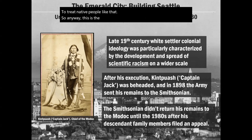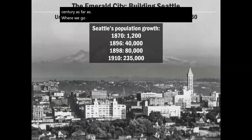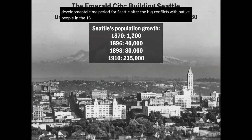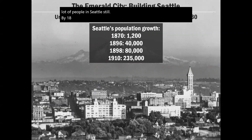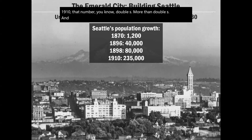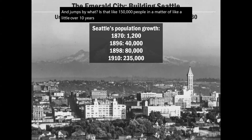That's the federal context of what's going on in the late 19th century as far as where we go from here in our story of Seattle's development. This is a really major developmental time period for Seattle after the big conflicts with Native people in the 1850s. In 1870 there were about 1,200 people in Seattle — not a lot. By 1896 that number grew a lot, doubling in those years, and then by 1910 the number more than doubles, jumping by about 150,000 people in a little over 10 years.